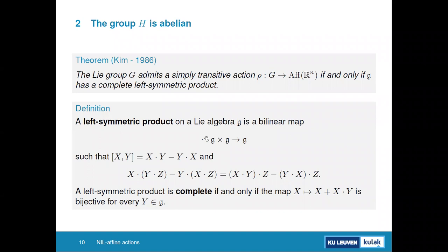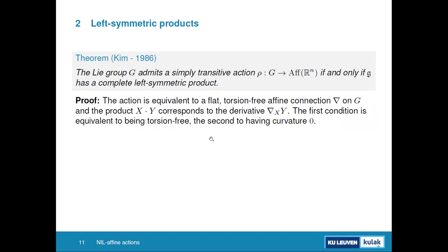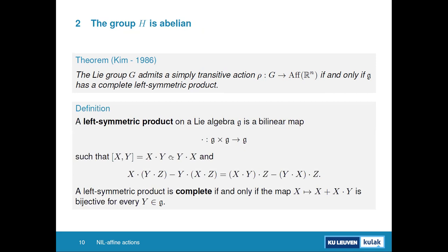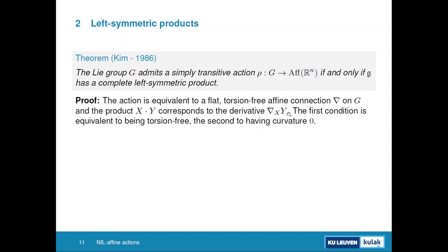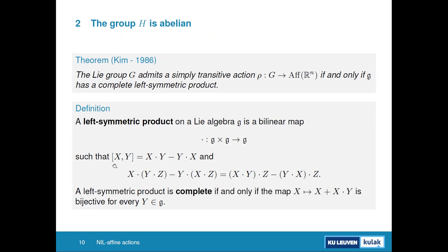The complete left-symmetric product satisfies: the commutator from the product equals the Lie bracket, and the identity map plus right multiplication is bijective for every element. This corresponds to having a flat torsion-free affine connection on G. The first condition corresponds to the connection being torsion-free, and the second to the curvature tensor.